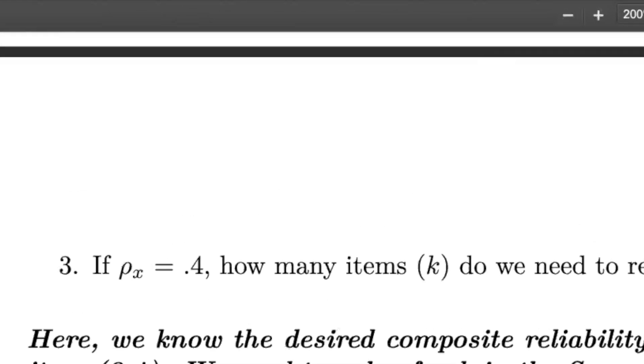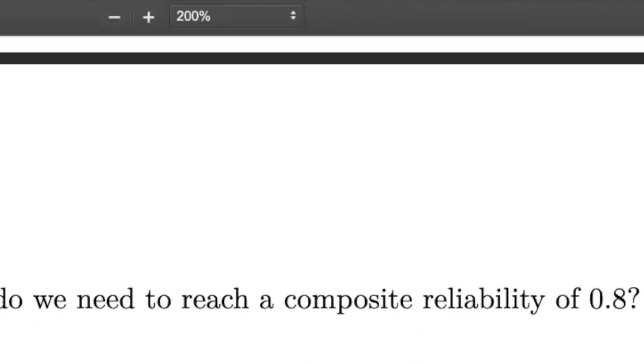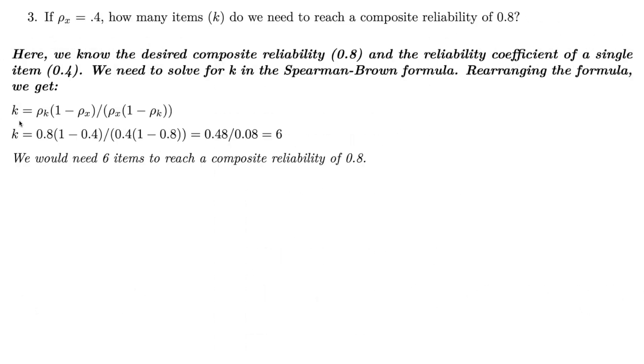Our third problem involves a little bit of a twist. We're asked if ρₓ equals 0.4, how many items would we need to reach a composite reliability of 0.8? This means we're starting with items that are 40% reliable, and we want to know how many we need to combine to achieve 80% reliability. When we rearrange our formula to solve for k, which is the new unknown, we find that we would need about six items to reach a composite reliability of 0.8.